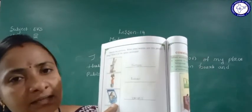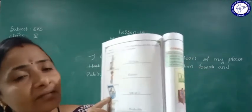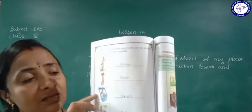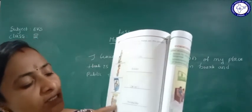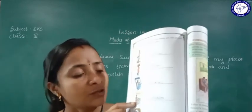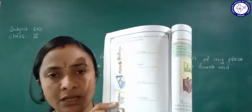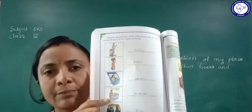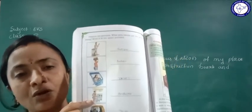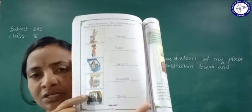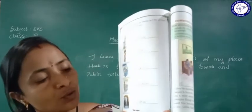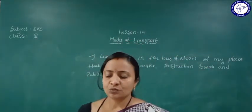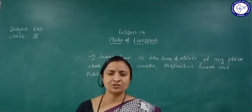Observe the pictures and write what jobs the people are doing. One person is sweeping - we call him a sweeper. One person is carrying bags - we call him a laborer or worker. A lady is driving a vehicle - we call her a driver. A person in the bus is giving tickets to people - we call him a conductor. One person is riding the auto rickshaw - we call him a driver. I hope you understood. This lesson is completed. Tomorrow we will start a new lesson. Thank you for watching.